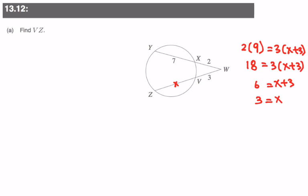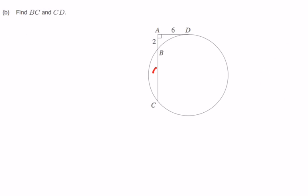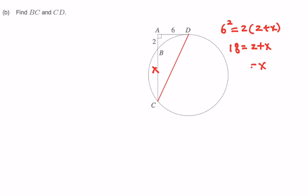Let's move on to the next question. They want us to find BC and CD. We call BC as X. Here 6 squared, because the tangent line segment squared, is equal to the outer which is 2 times the whole thing, which is 2 plus X. When we expand and divide by 2, we realize that 18 equals 2 plus X, hence X equals 16, and that is the value of BC.